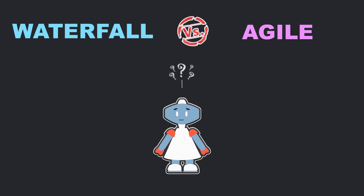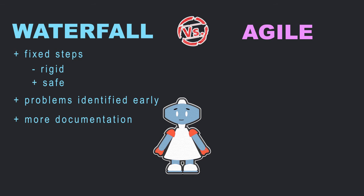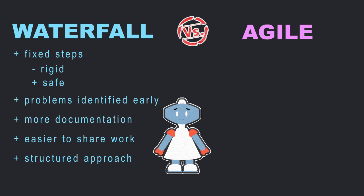Selecting the best methodology for your project depends on many factors. While waterfall's fixed steps and downward motion may seem rigid, it can be the safer method. Problems are identified early on in the process. More documentation is created, which makes it easier for team members to pick up where someone else left off, and it provides a structured approach.